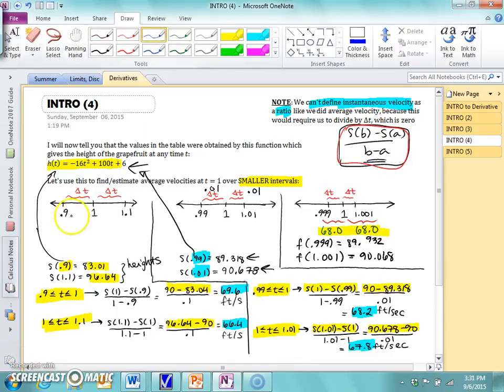So just to emphasize one more time what happened here. When the change in time was 0.1, we had 69.6 and 66.4. When the change in time was smaller, it was 0.01, we had 68.2 and 67.8 feet per second. And when the change in time was just 0.001, which is very, very small, look how close our average velocities are. They're basically the same thing.